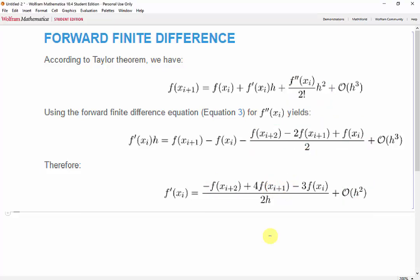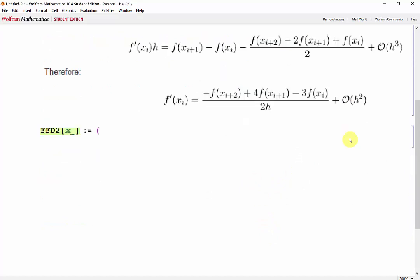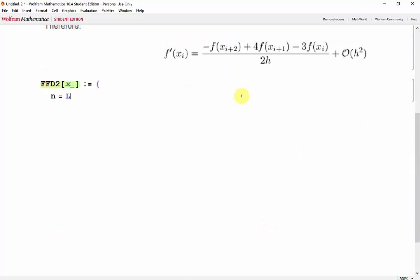Now the function is nearly identical to the function from before. FFD2 will have an input of x. I'll scroll down to give a space. We'll need the length of x. And we also need a table with a placeholder of 0. And now the length of our vector will be n minus 2 because the derivative can only be found up to the third last data point.